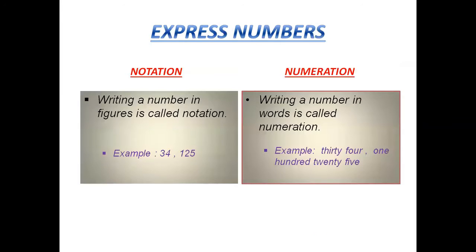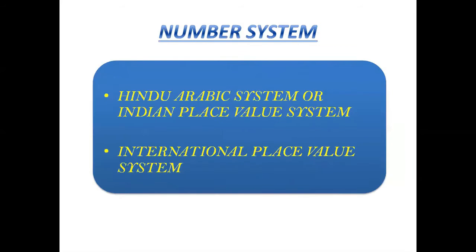We can express a number in two ways — one is in figures and the other is in words. If you are writing a number in figures, it is called notation. If you are writing a number in words, it is called numeration. Examples for both notation and numeration are given.